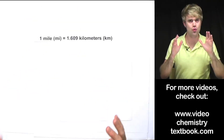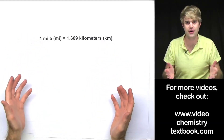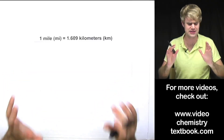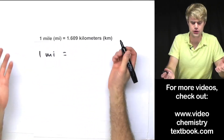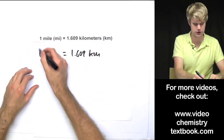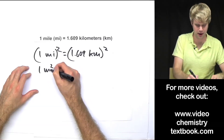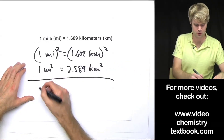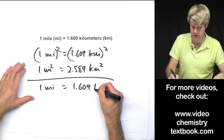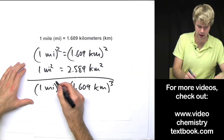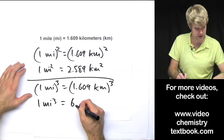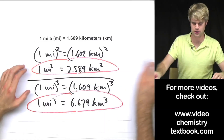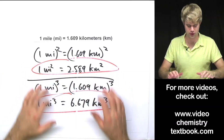You can use the strategy of squaring or cubing both sides of a relationship to come up with conversion factors that let you convert between any squared units of area or cubed units of volume. For example, if I wanted to convert between square miles and square kilometers, I'd square both sides of the relationship, giving me 1 square mile equals 2.589 square kilometers. Or I could cube both sides to get 1 cubic mile equals 6.679 cubic kilometers. You can then use these relationships to build conversion factors to go back and forth between these units.